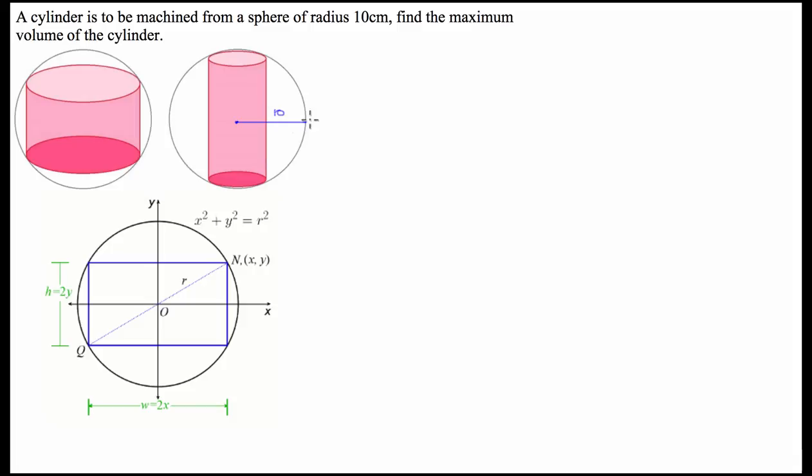The easier way to think about this though is if we have a look at a cross-section of the sphere with the inscribed cylinder. So the inscribed cylinder, if we cut it as a cross-section, it's going to look like a rectangle. So we're going to use this drawing to try and optimize the cylinder volume.